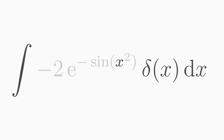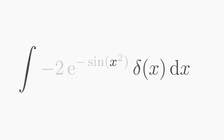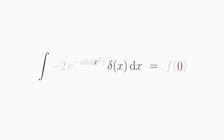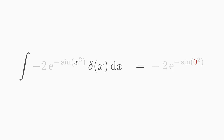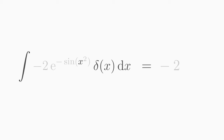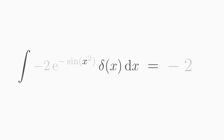Let's make a few examples. Consider this function in the integral with the delta function. The result of this integral is f(0). Inserting x equals zero: sine of zero is zero, e to the power of zero is 1. So the integral equals minus 2. This is how easy it is to calculate complicated integrals when a delta function occurs in the integrand.